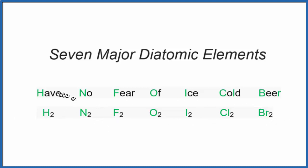The way to remember it is have no fear of ice-cold beer. So we have H, that's our H2, N, that's our N2, and so on. For cold, C and L, that's our Cl2, and then B and R, that's our Br2.